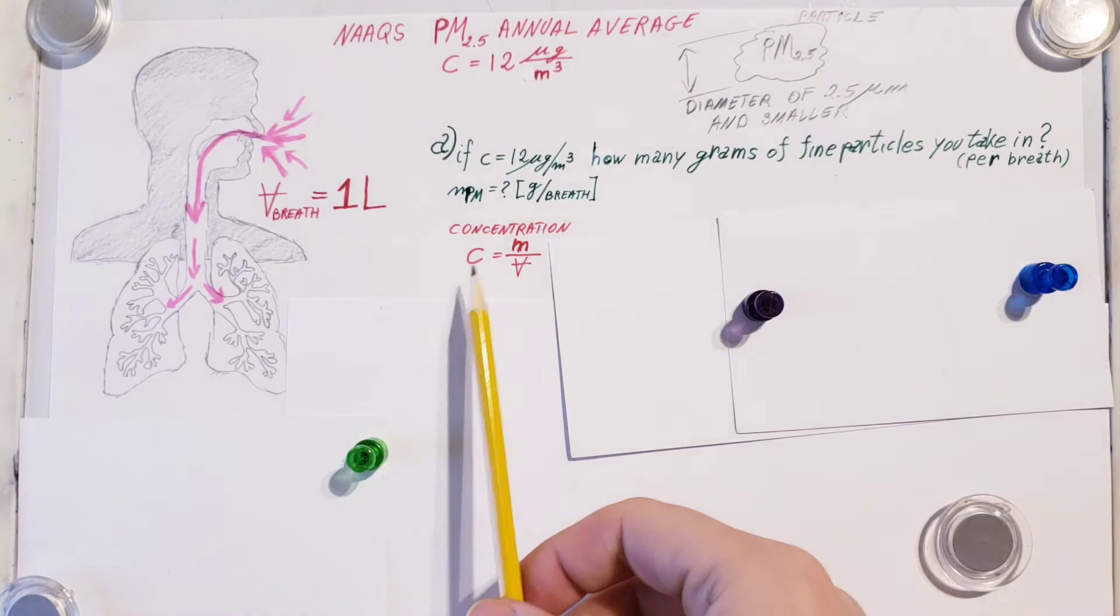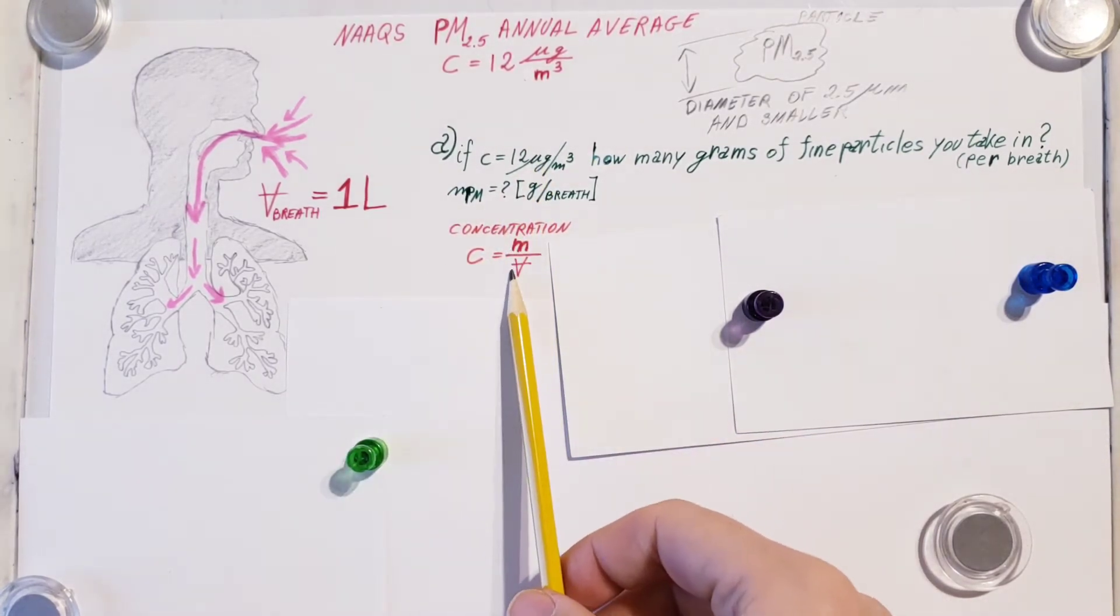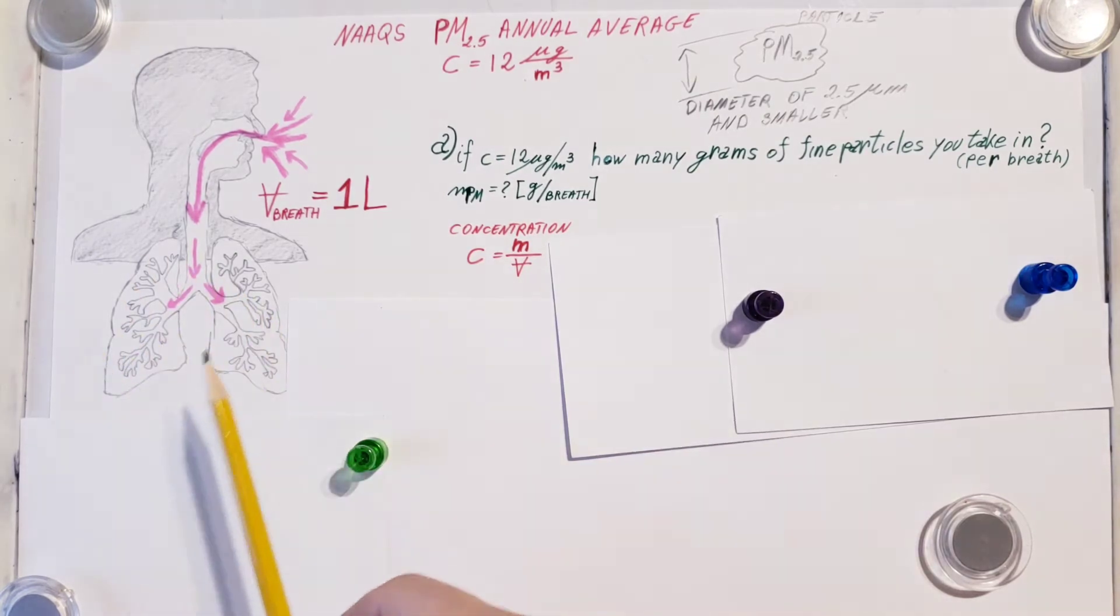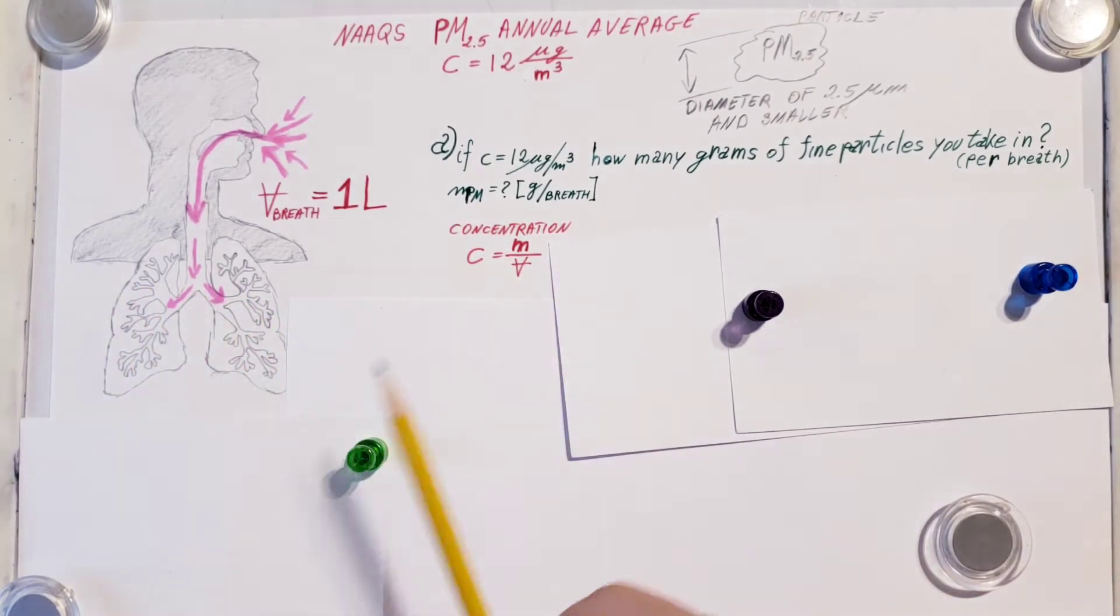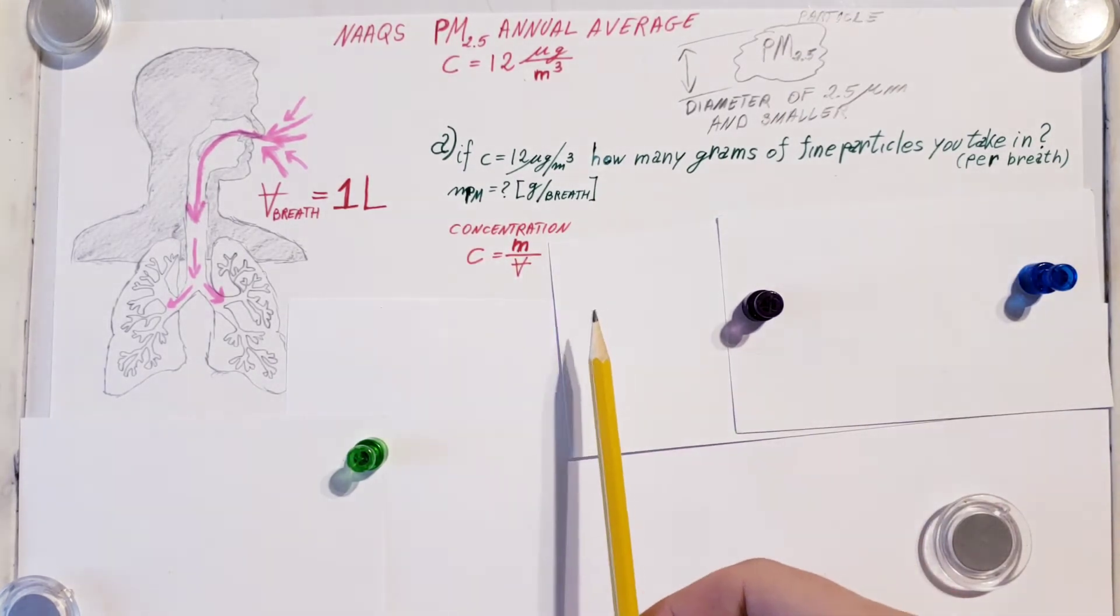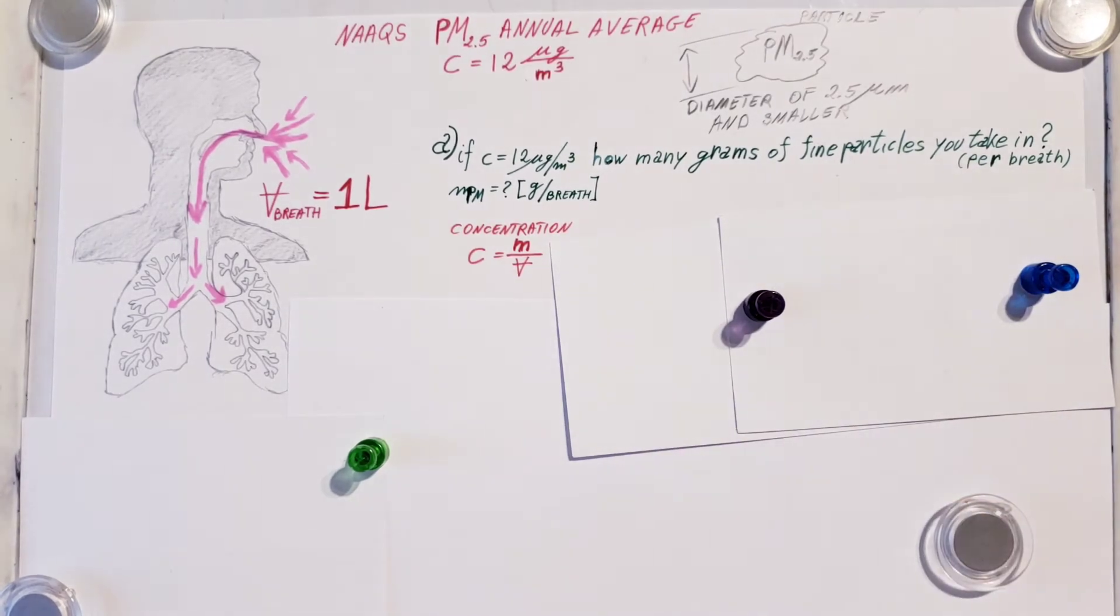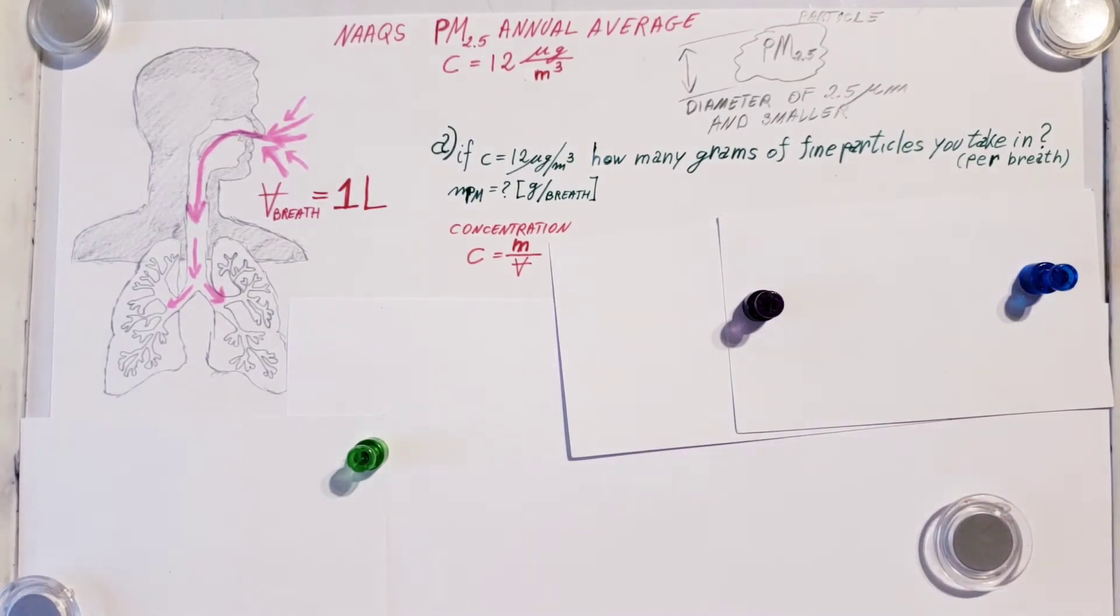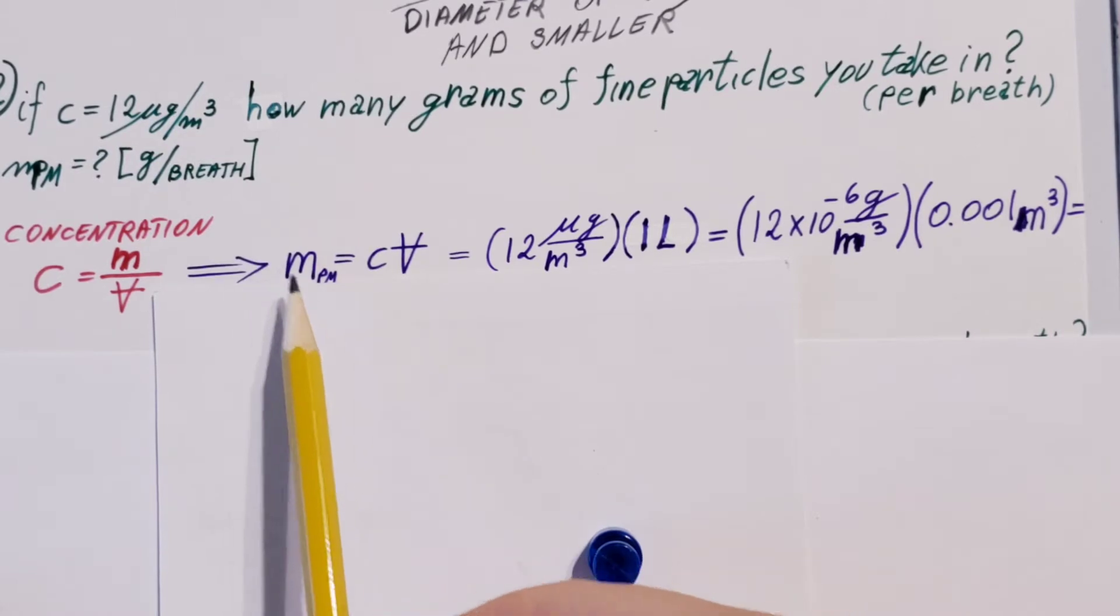Here we're going to have the mass of our particles over the volume of our lungs. This is m over V. I usually cross it out because some problems have volume and velocity together, and this way if I cross it out I know that's volume. Let's proceed from here. We can solve for the mass: total mass of PM equals C times volume.